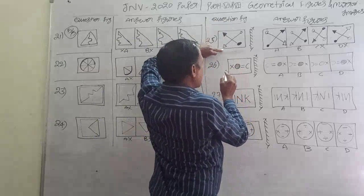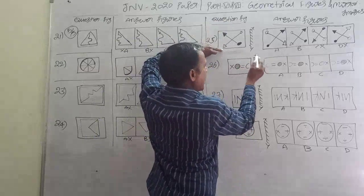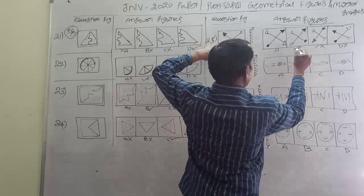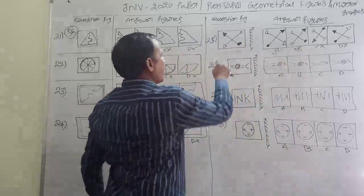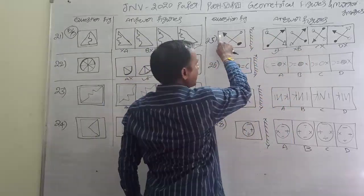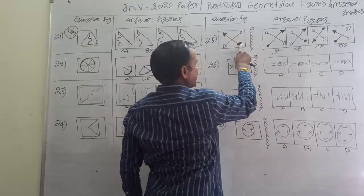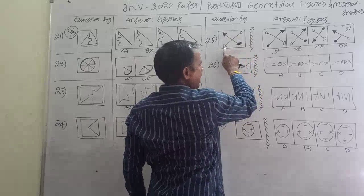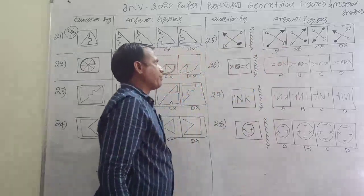The arrow is left side and right side. This is not an answer. This is not an answer. Left side and right side. Right side and left side. The arrow is right. So the answer is A.